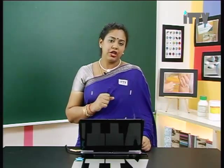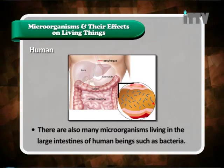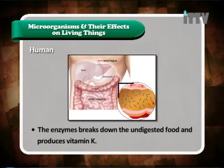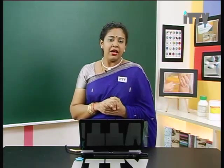Let's look at the roles of bacteria and microorganisms in humans. There are many microorganisms living in the large intestine of human beings, such as bacteria. The bacteria secretes enzymes in the large intestine. The enzymes break down the undigested food and produce vitamin K, which is gradually absorbed. These are the importance of microorganisms in food digestion.